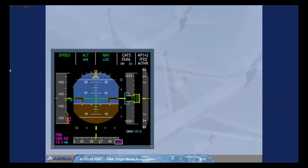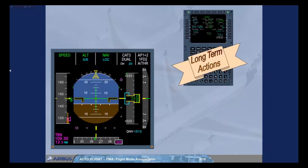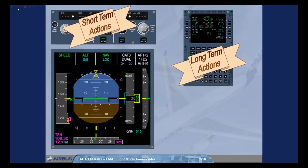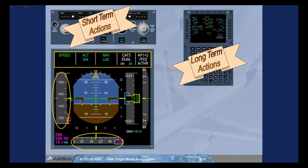Long-term actions, through the MCDU, and short-term actions, through the FCU, must be cross-checked on the Flight Mode Annunciator located at the top of the PFD, as well as on the various scales of the PFD. The Guidance Mode Engagement Arm Status, and their associated Guidance Targets, are provided on the FMA and PFD scales: Speed, Heading, Altitude.